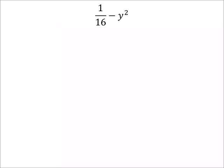Going back to the exponent rules, on this one we've got an A and a B. The A in this one would be — what is 1/16th? What would be squared to be that? Well, that'd be 1/4th. 1 squared is 1, and 4 squared is 16.